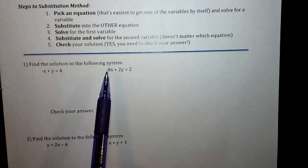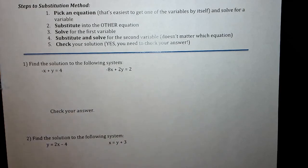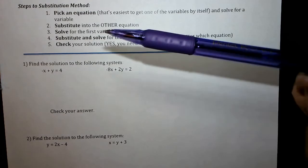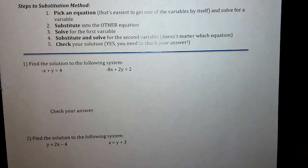I can choose either of these equations and I can choose either x or y. My suggestion, what's going to be the easiest or at least the least steps, is if there's a variable that has a coefficient of one or doesn't have a number on it, that's going to be the least amount of inverse operations to transform it.